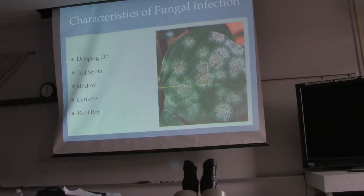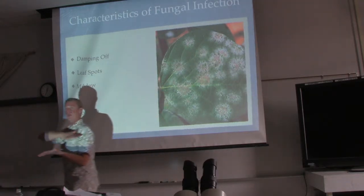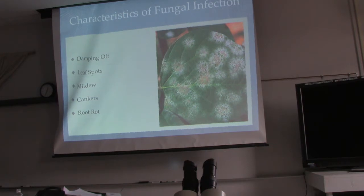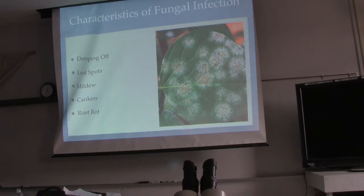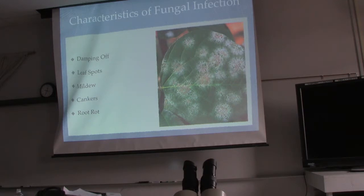Powdery mildew looks like a white powder over the top of a leaf. It's very common in greenhouses, nurseries, and close to the ground. It's a fungus that gets blown around. While most fungi live on the underside of leaves, this fungus pokes through the waxy top surface, creating little hyphae all over the leaf, which can be quite decimating. If you find powdery mildew, watch your air movement — increasing air flow will probably make it go away.